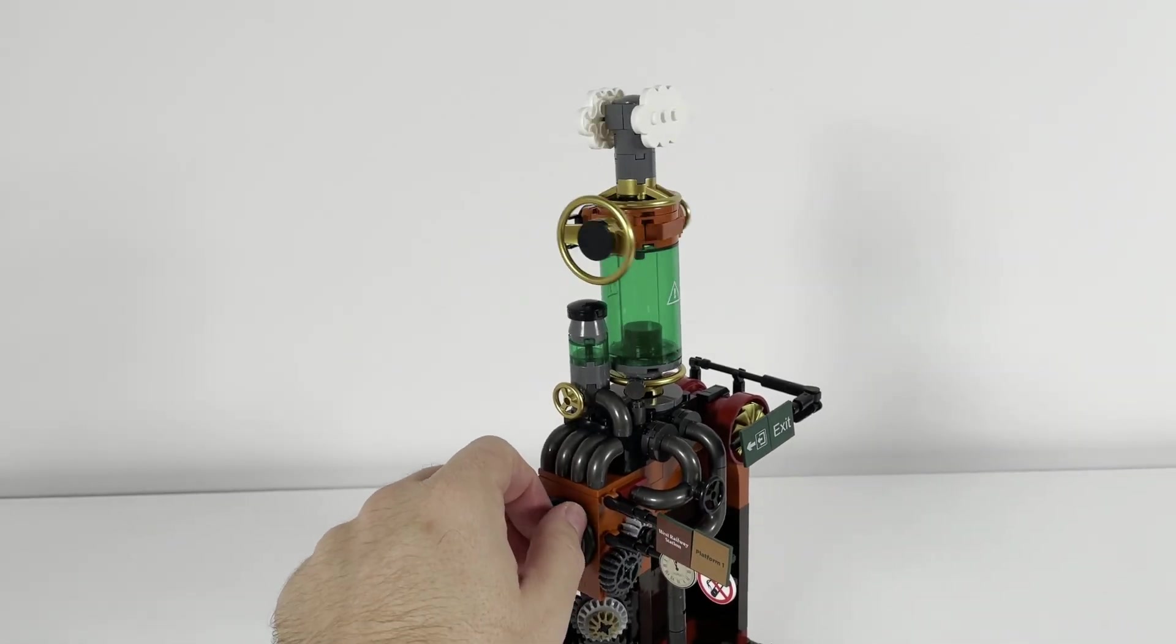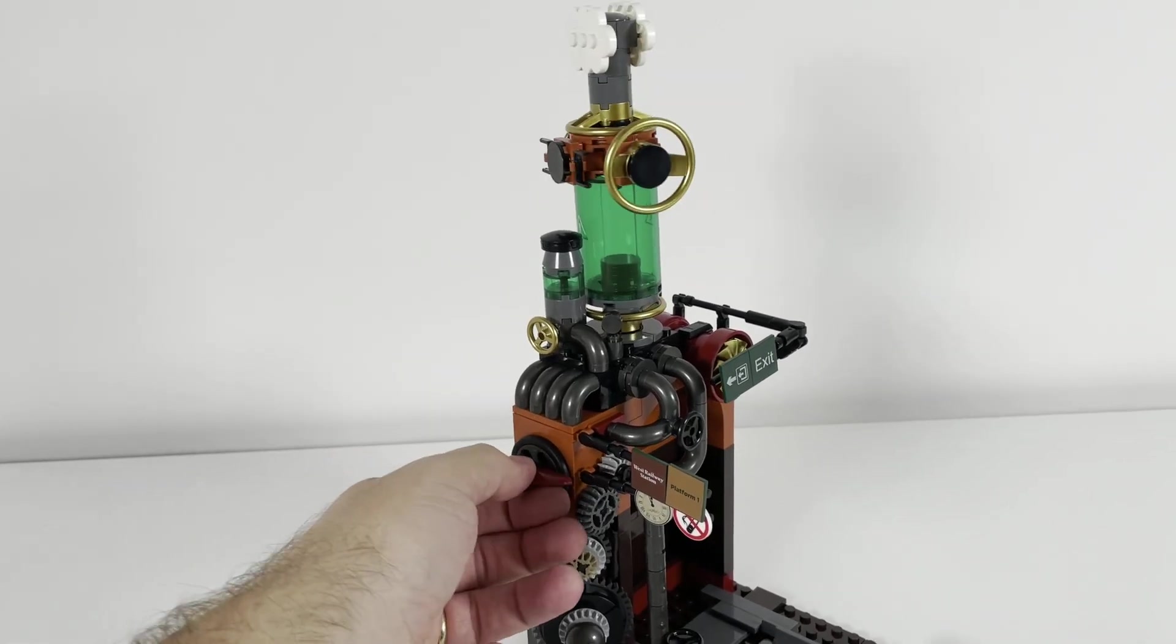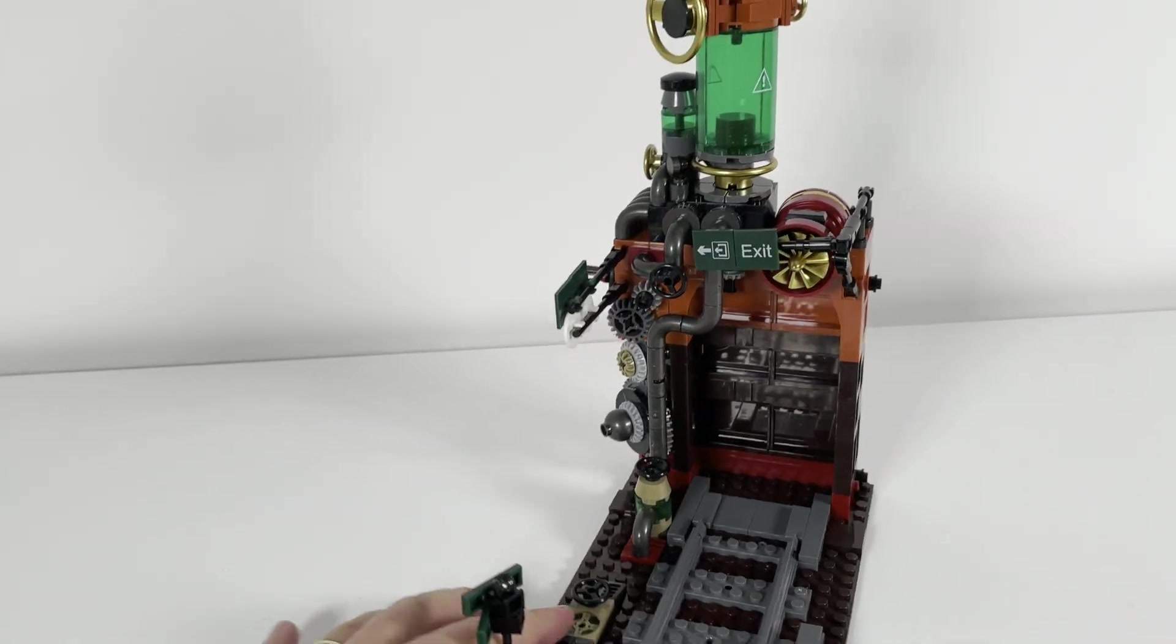As you can see, if I turn this around, the green tube with the clouds on the top also spins. The other gears are just there for decoration and they don't have any function.